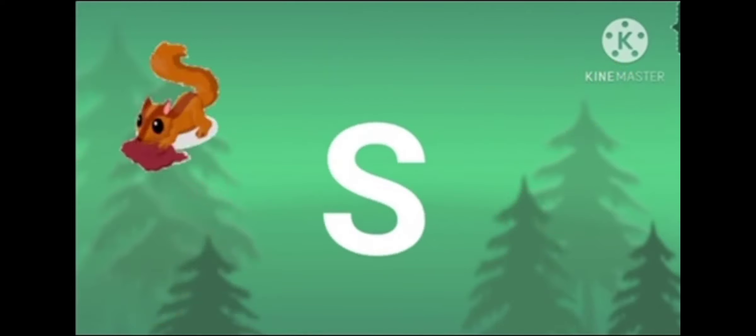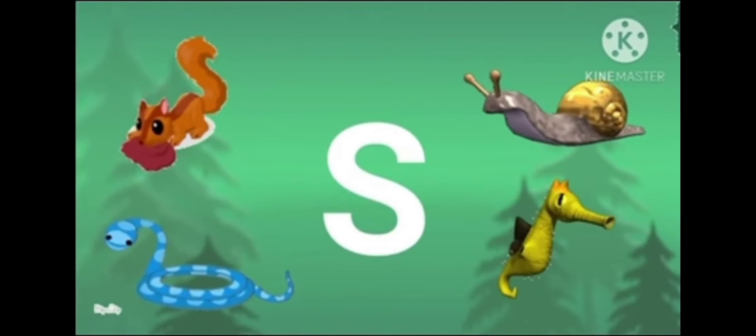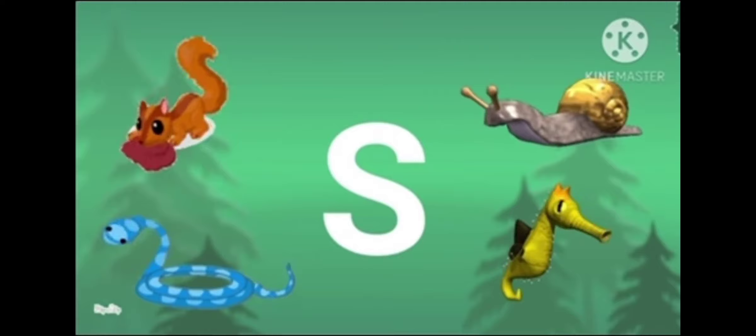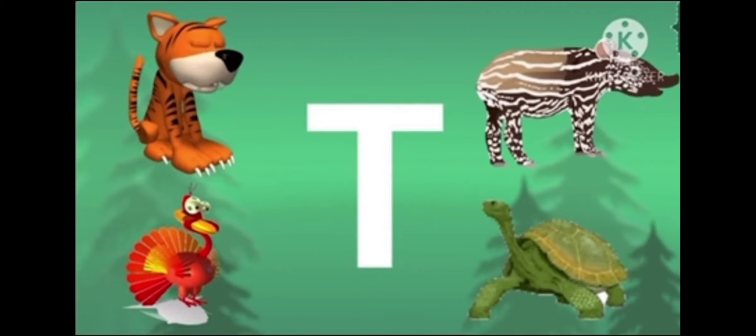S is for squirrel, snake and snail. S is for seahorse, swimming in the sea. T is for tiger, turkey and tapir. T is for tortoise, who can live over a hundred years.